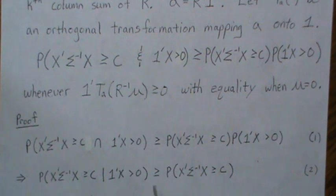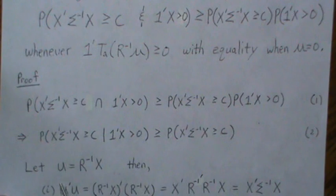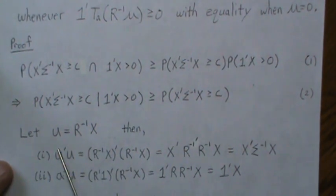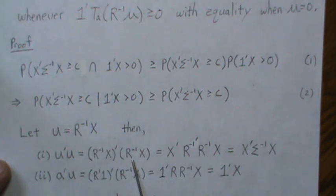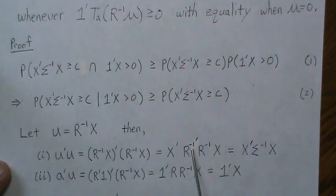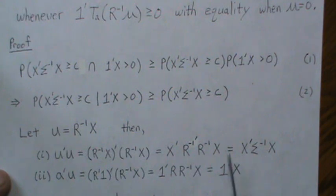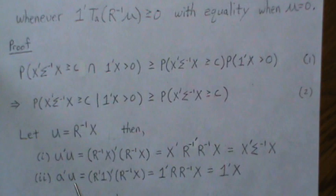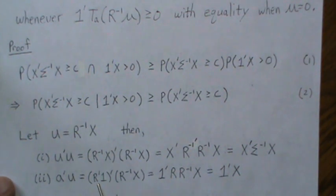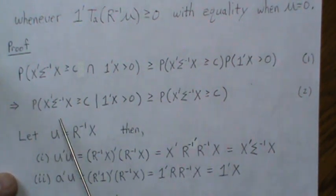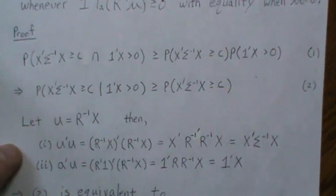Let u equal R⁻¹x, where R is one of the matrices in the Cholesky decomposition. Note that μ'Σ⁻¹μ — when you plug in and take the transpose — gives you σ² inverse, so μ equals this expression. Now a·u: plugging in, a is R'·1' and u is R⁻¹x, multiplying out gives 1'x. So we can substitute u'u for x'Σ⁻¹x and a·u for the sum of x. The next page formalizes these substitutions.